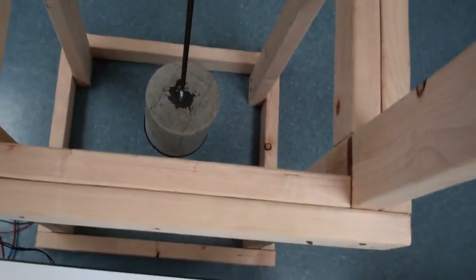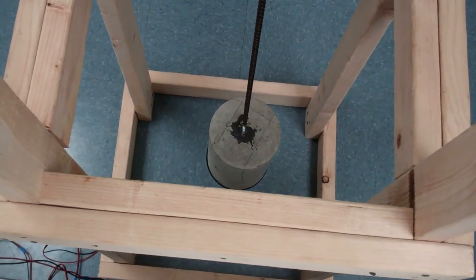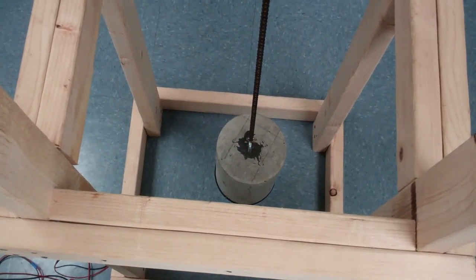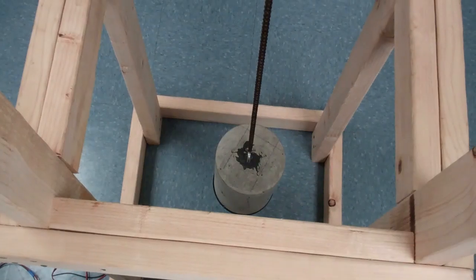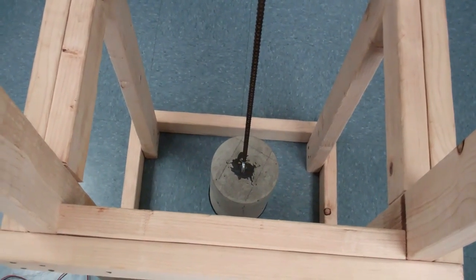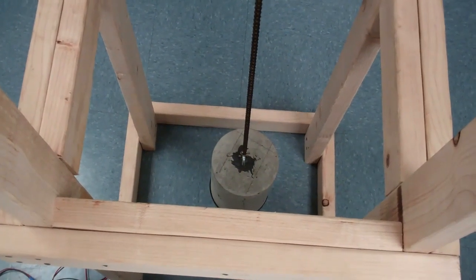The falling weight is a concrete cylinder. One of the students works at a concrete testing lab. So this was one of their leftover concrete cylinders that wasn't going to go through any compression testing. So the weight is about 21 or 22 pounds.